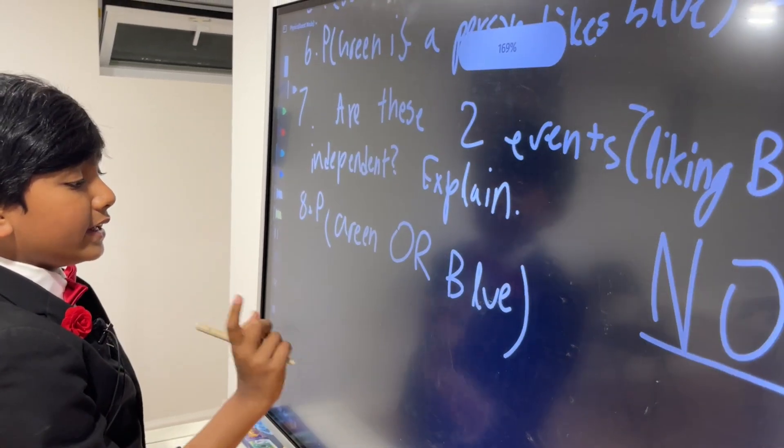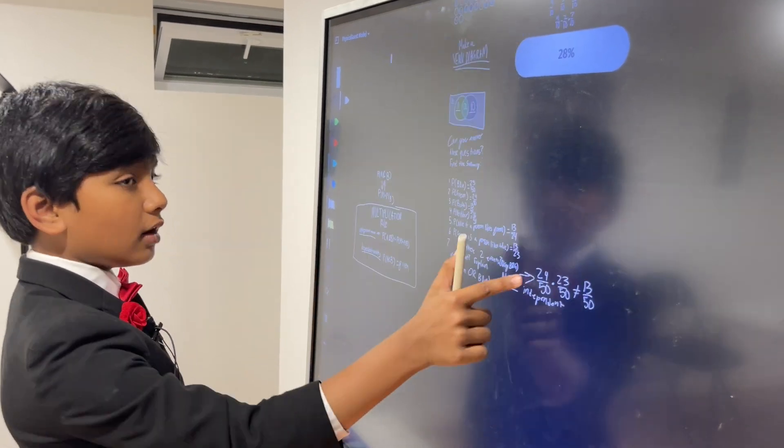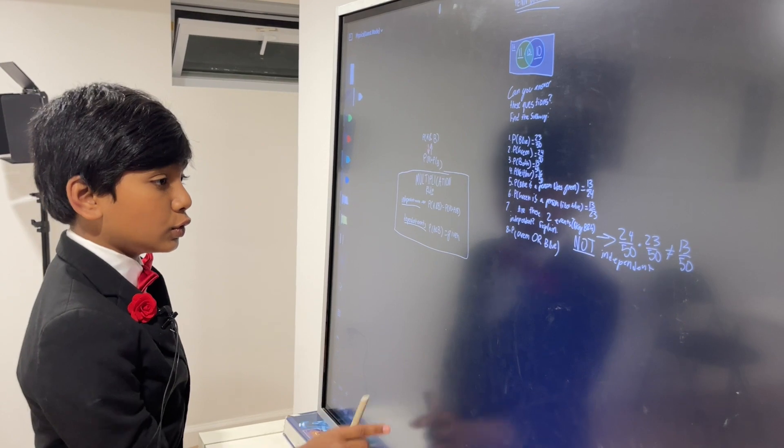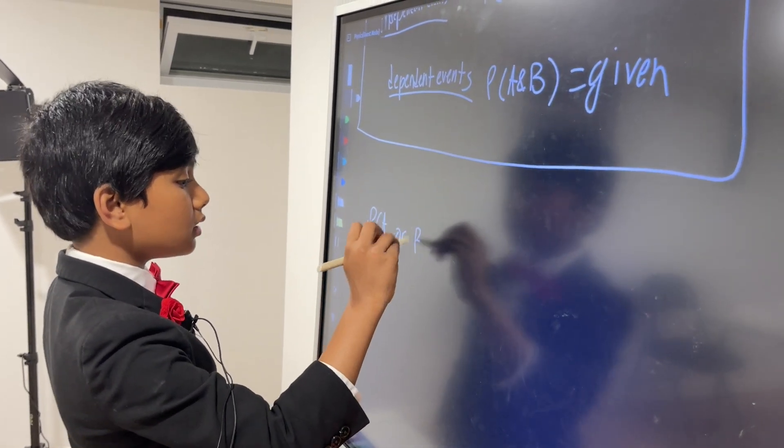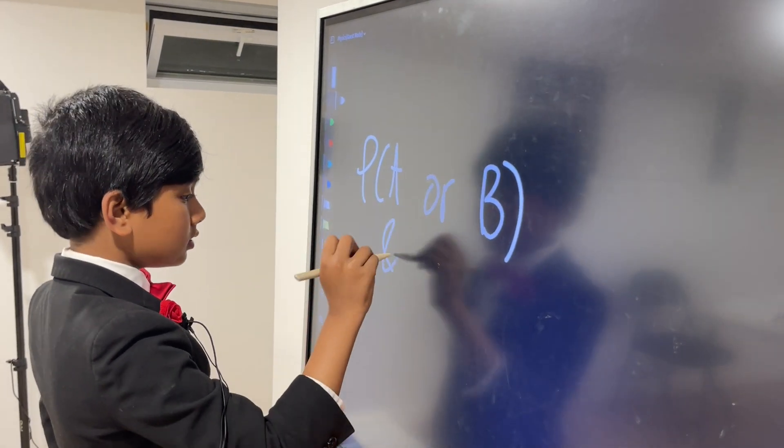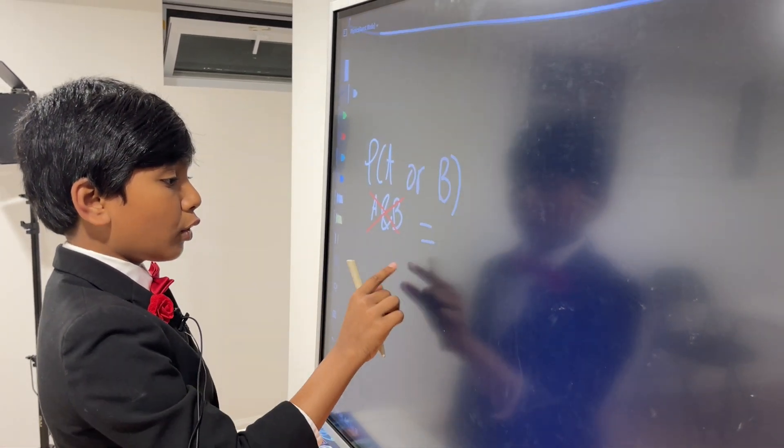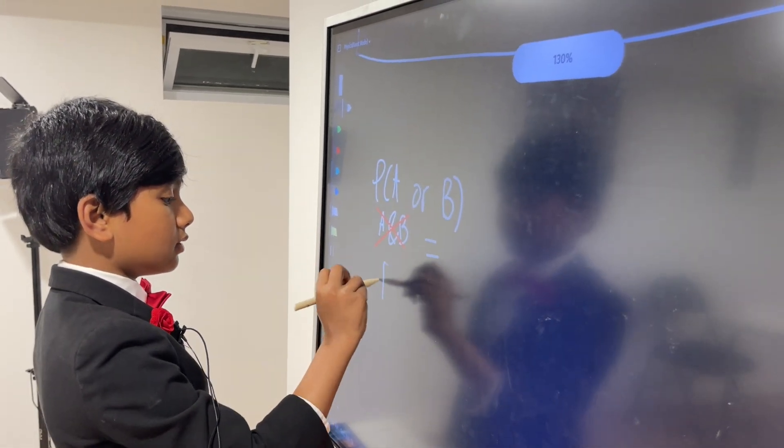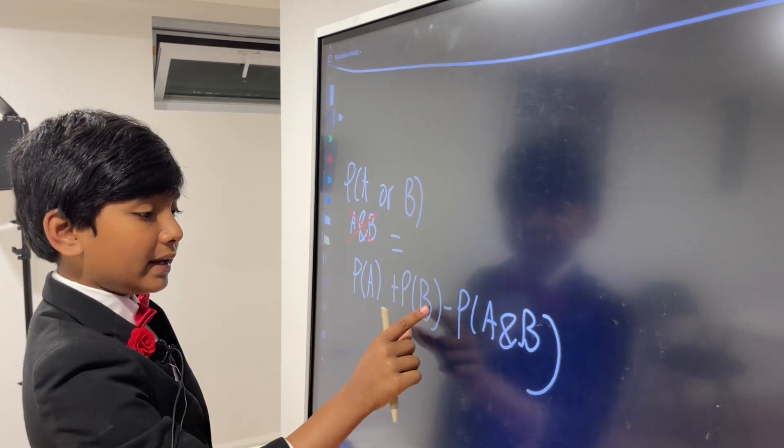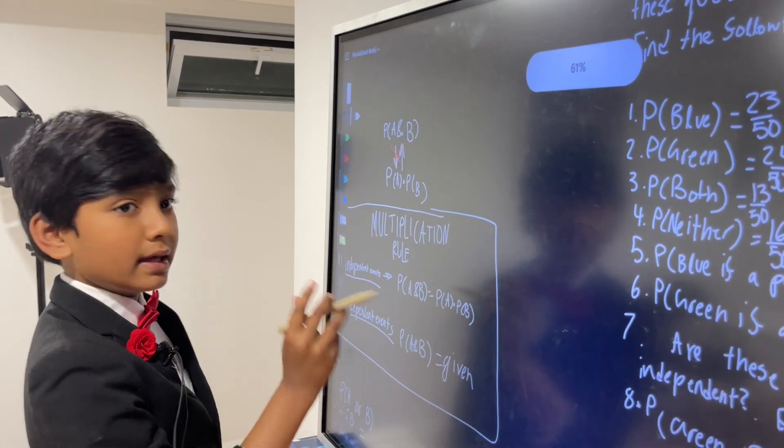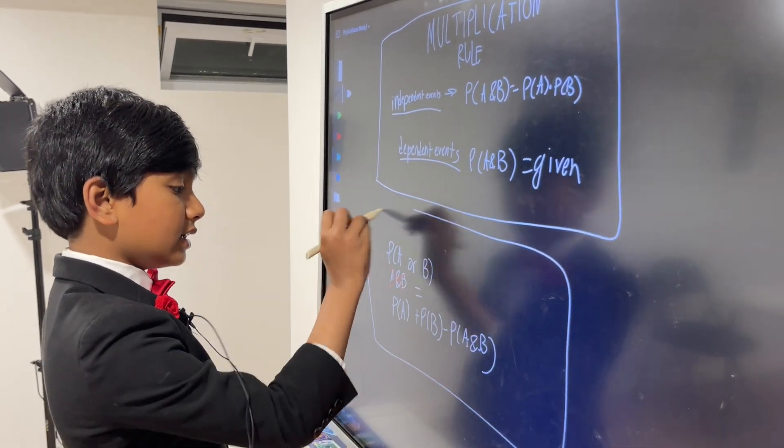So, now, we have to find the probability of green or blue. And this is a little trickier, but still easy. To do this, we have to utilize something called the addition rule. So, what is the addition rule? Well, it basically states that P of A or B, which excludes and, for events that are dependent, is just P of A plus P of B minus P of A and B. It's the same for independent events, except you can replace this with P of A times P of B because of the earlier rule. So, this is the addition rule.